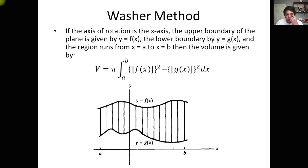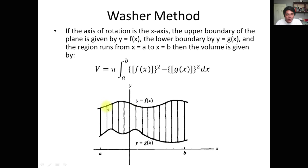We will be using the washer method if we have two planes bounded together, and their boundary is not actually involving the X and Y axes — the bounded area does not lie on the X and Y axes. So we use the so-called washer method. If the axis of rotation is the X-axis, the upper boundary of the plane is given by Y = F(x), the lower boundary by Y = G(x), and the region runs from x = A to B.